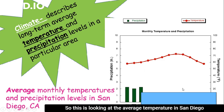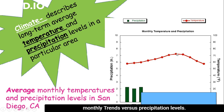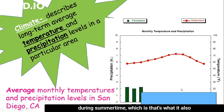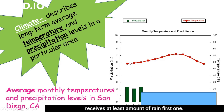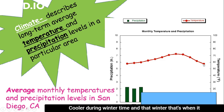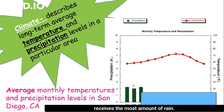This graph shows the average temperature in San Diego, California over a year-long period — average monthly trends versus precipitation levels. You can see very specific patterns: when it's really hot during summertime, that's also when it receives the least rain, versus when it's cooler during wintertime, which is when it receives the most rain.